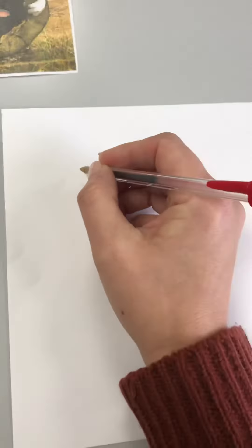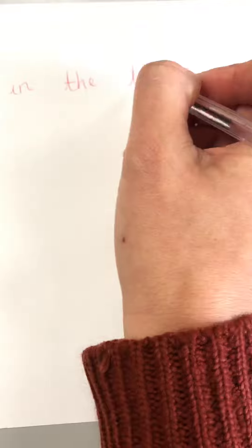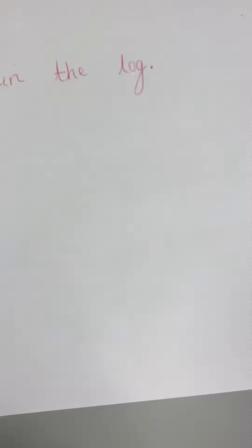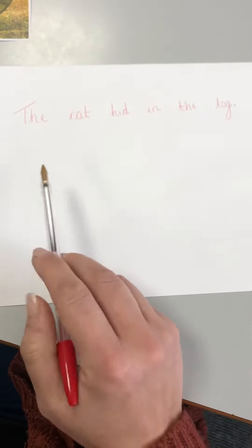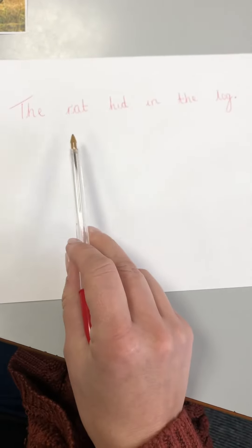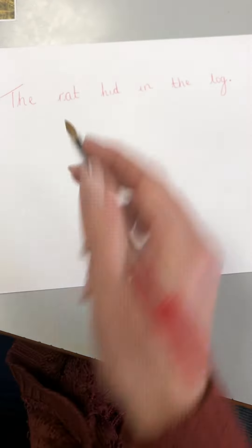The rat hid in the log. Have I got my capital letters? Have I got my finger spaces? Have I got my full stop? I forgot my full stop. Now I've got my full stop. And does it make sense? The rat hid in the log. I think that's a good sentence.